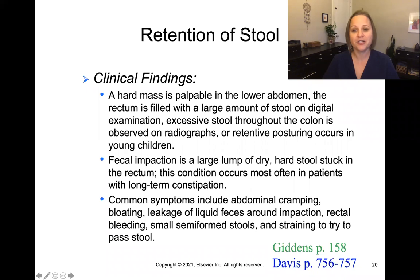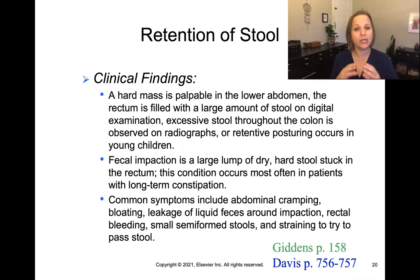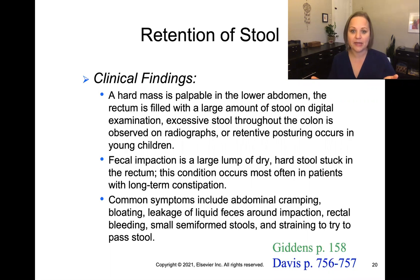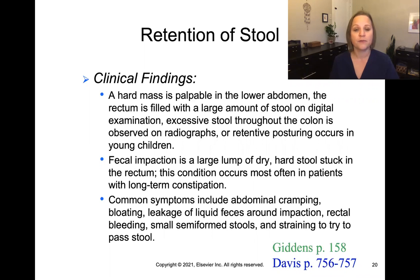Common symptoms include abdominal cramping, bloating, and a leakage of liquid feces around the impaction. If there's a large, dry, hard mass of stool in the rectum, the only thing that can get past it is very watery diarrhea — so you can have diarrhea while constipated because a little stool is leaking around the impaction. You may also notice rectal bleeding from straining, and very small, semi-formed stools where just little bits are being passed.